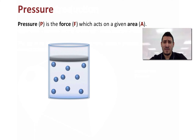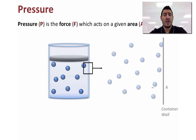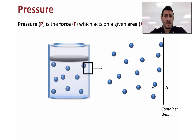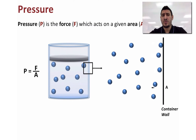How do we define pressure? Pressure is the force F which acts on a given area A. Consider a container full of gas — if we zoom in on the wall of the container we can see that the gas particles are exerting a pressure by applying a force F on a certain area of the container wall. So we can say that pressure is equal to force divided by area.